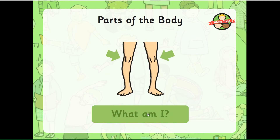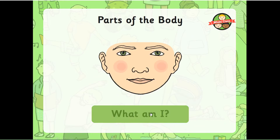What am I? It's pointing at two of these — in the middle of your leg it can bend. It's your knee. What am I? This is part of your head — the front part of your head with your eyes and nose and mouth. It's your face.